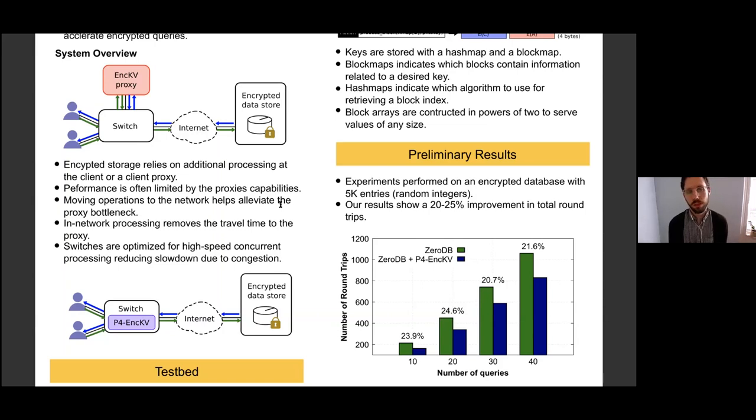A lot of the proxy is often the bottleneck in these types of systems. There's a number of different encrypted data store solutions, but a lot of them have congestion issues at the proxy. So moving anything, the idea essentially is by moving what we can to the data plane will hopefully relieve those congestion issues. I think you could keep adding more and more powerful servers, but I guess that's a trade-off.